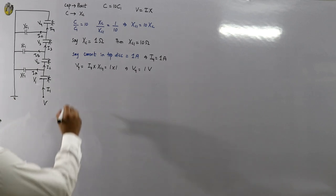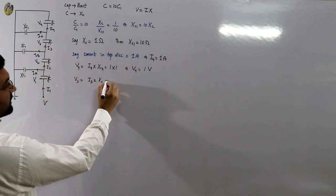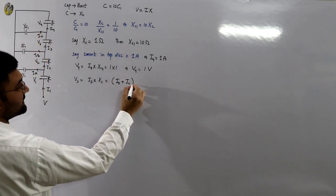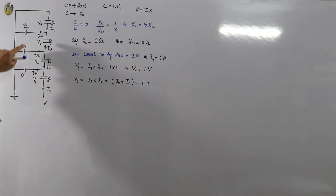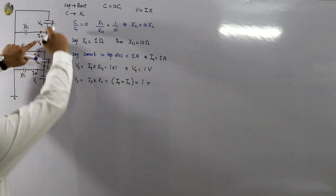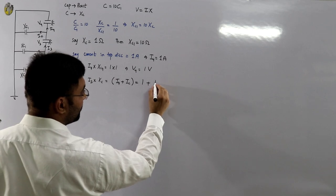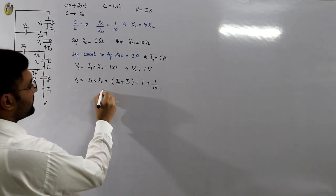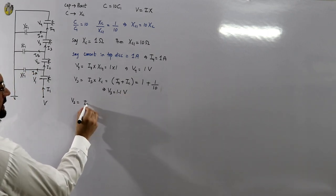V3 equals I3 multiplied by Xc, where I3 equals I4 plus Ic. I4 is 1 ampere, and Ic is the current through Xc1 (10 ohms), which equals V4 divided by Xc1, giving 1/10 = 0.1 ampere. So I3 equals 1 + 0.1 = 1.1 amperes, and V3 equals 1.1 × 1 = 1.1 volts.